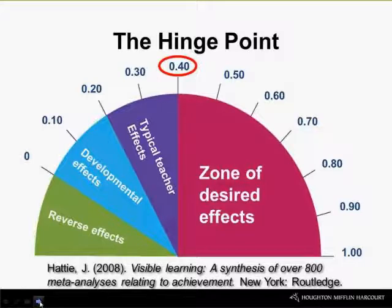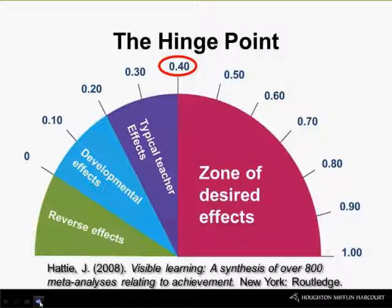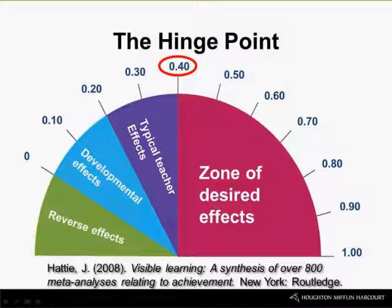The light blue wedge is labeled developmental effects. From zero up to about .2, this is how much kids will grow in a given year just by getting older, having more experiences, going to school, and participating. So through sheer development, we'll see an effect size between zero and .2. From .2 to .4, when John Hattie synthesized all of his research — representing literally tens of millions of students — what he found was that the average or typical teacher impact was up to about .4, an effect size of .4.